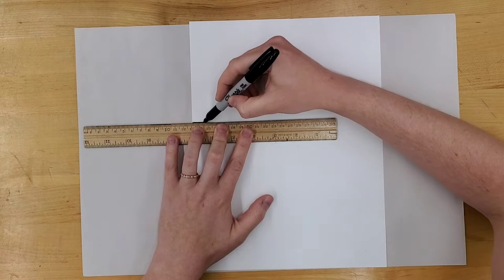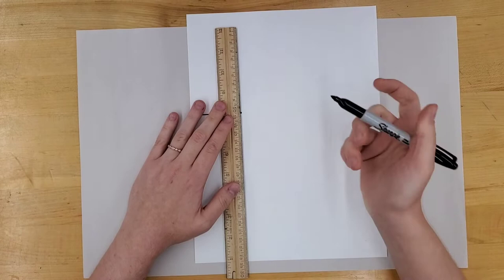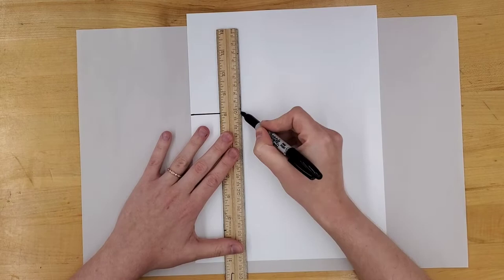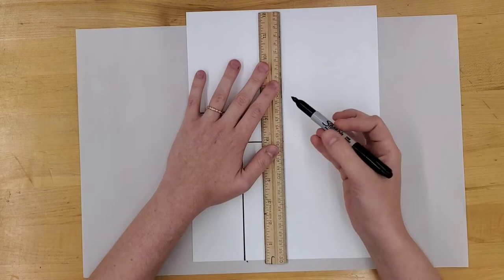Double check that your ruler is straight before you make your mark. Hold that ruler tight. Continue across making the outlines of your buildings.